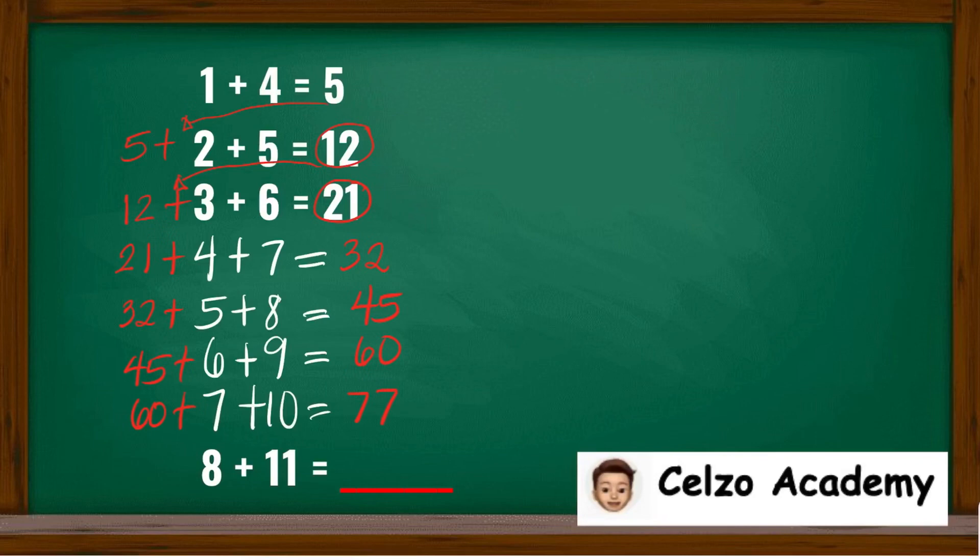For 8 plus 11, we need to add the previous answer, 77. 77 plus 8 is 85, 85 plus 11 is 96.